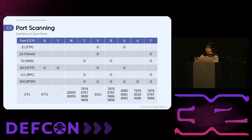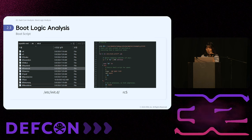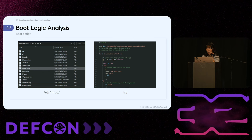Among the well-known ports, FTP, Telnet, DNS, HTTP, RPC, and RTSP ports were frequently open. The third step in the analysis process is analyzing boot logic. We examine files in /etc/init.d, /etc/rc.local, and system daemon configuration files to identify and analyze scripts executed during boot. For example, the picture shows the RCS file in /etc/init.d, which runs all files starting with 'S' in /etc/init.d. We analyze the code of all S files to understand the boot logic.